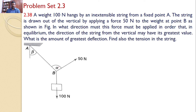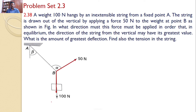By considering the free body diagram of the system at point B, we can see that there are three forces acting at B. One is the self weight downwards of 100 newtons. Another one is the applied force of 50 newtons. And the other one is the tension in the string, which acts along the string and is directed away from the point of interest.